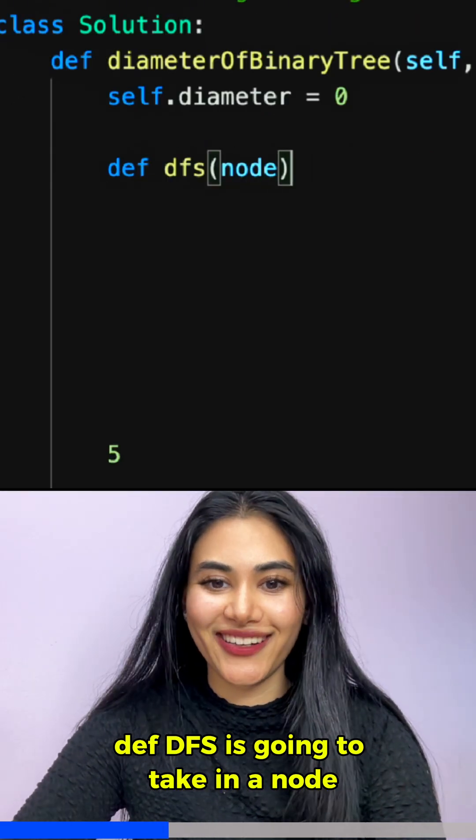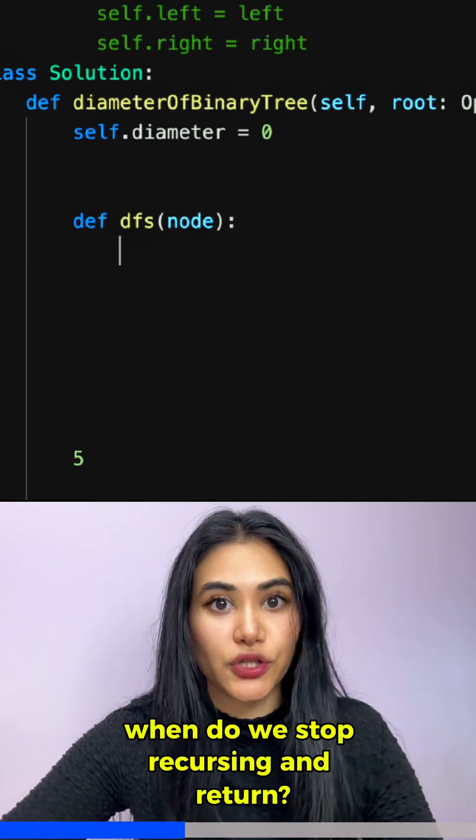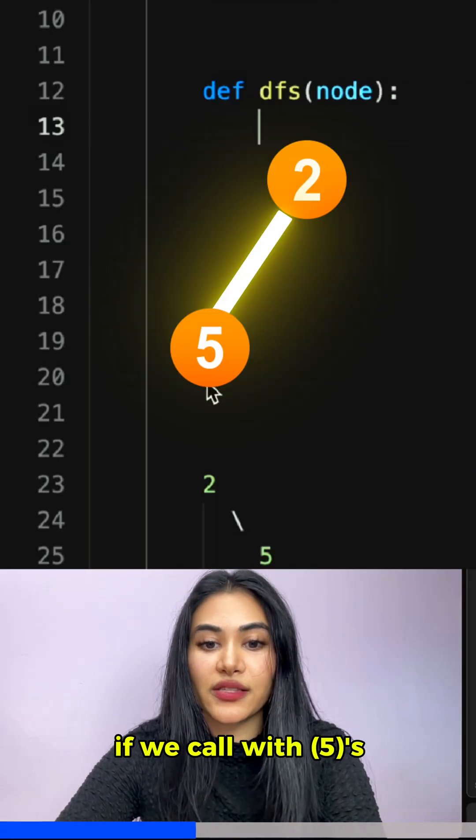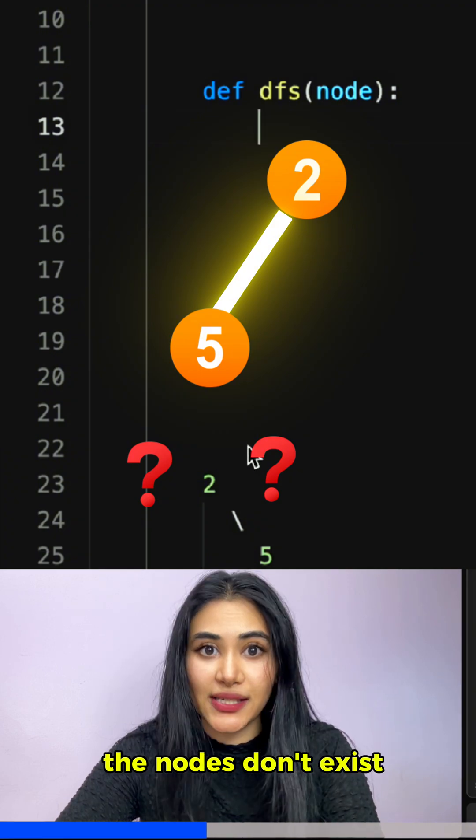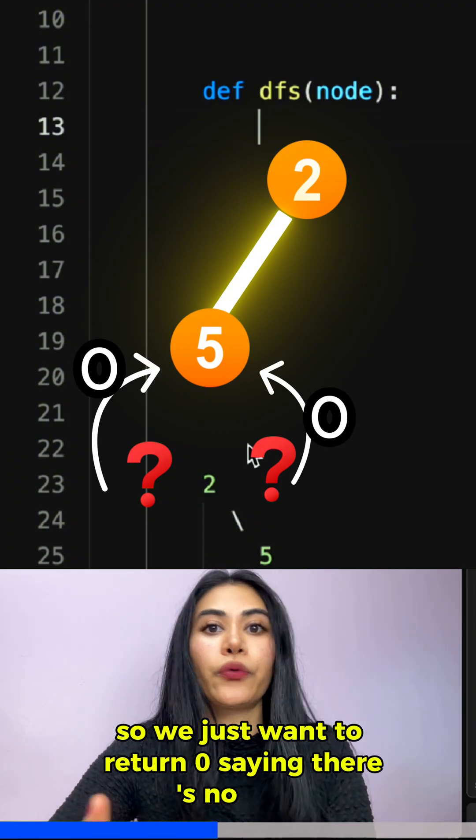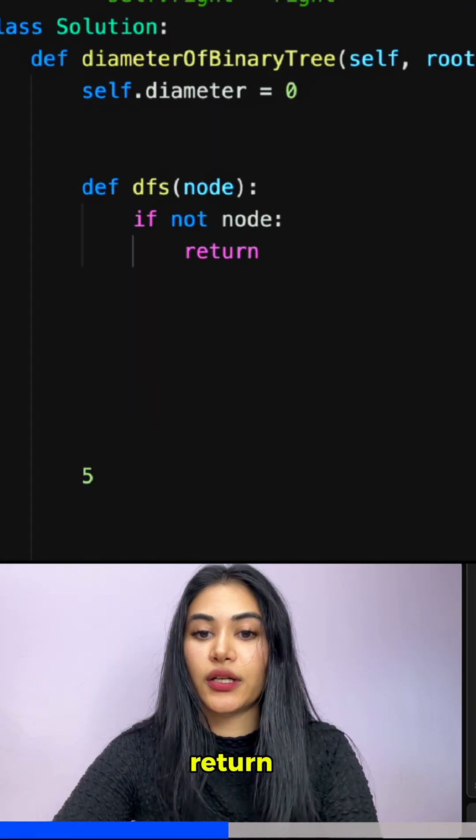Base case: when do we stop recursing and return? If we call with five's left or five's right, the nodes don't exist, so we just want to return zero saying there's no edge. If not node, return zero.